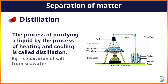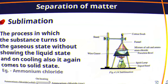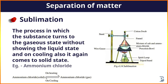In this way, salt is left behind in the conical flask. This is also called the distillation method. The last topic is sublimation. Sublimation is the process in which a substance turns to the gaseous state without showing a liquid state, and on cooling it again comes back to the solid state without showing a liquid state.